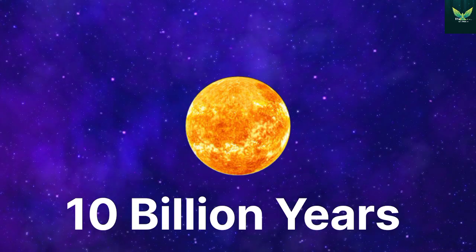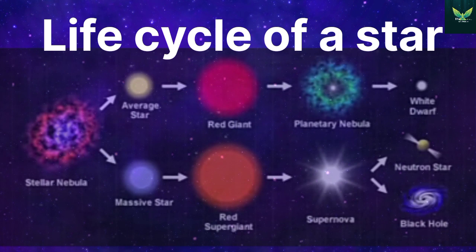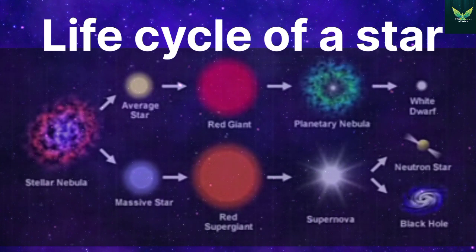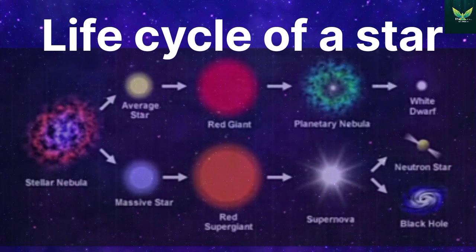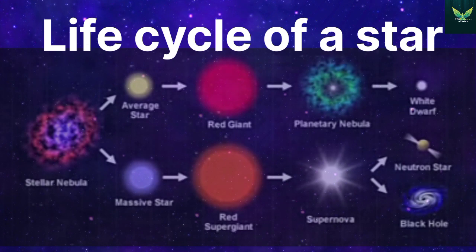But what happens next depends on the mass of the star. Let's look at the chart of the life cycle of a star. If the mass of the star isn't high - that is, an average star - it turns into a red giant, after which it can become a planetary nebula or a white dwarf.